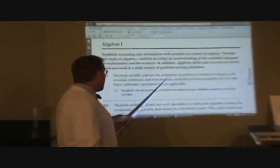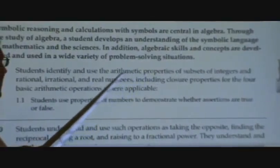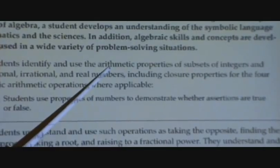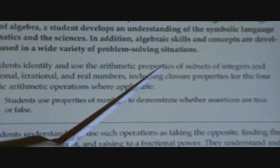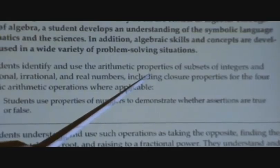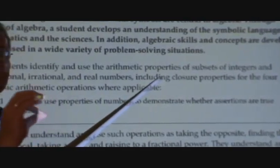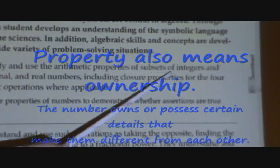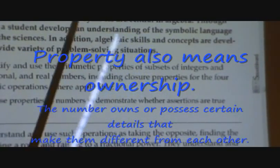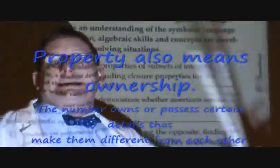Students identify and use arithmetic properties. Arithmetic is just an adjective for arithmetic or math. Math properties. A property, that's the plural of property. That is to say, the quality, the aspect of it. Subsets of integers - that means there's different kinds of numbers. There's a big set, and then there's a subset.